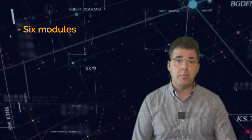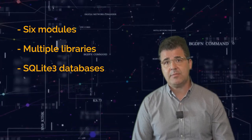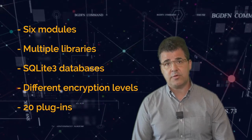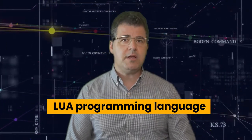So, how is Flame different from Stuxnet and Duqu? One of Flame's key characteristics is its 20 megabyte size, which dwarfs Stuxnet at 500 kilobytes. Flame comprises six modules, multiple libraries, SQLite3 databases, different encryption levels, and 20 plugins for enhanced functionality. Interestingly, the code is written in the LUA programming language, which is not commonly used for writing malware. Generally, malware comprises small files written in compact programming languages, making them easy to hide.